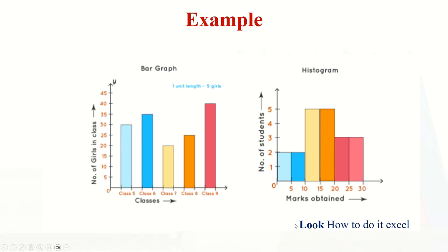Looking at an example: on the left-hand side there is a bar graph showing number of classes (5, 6, 7, 8, and 9) on the y-axis, with the number of girls in the class on the x-axis. On the other side we have a histogram, which is different — it shows marks obtained versus the number of students in the class. This illustrates how the two chart types differ visually.